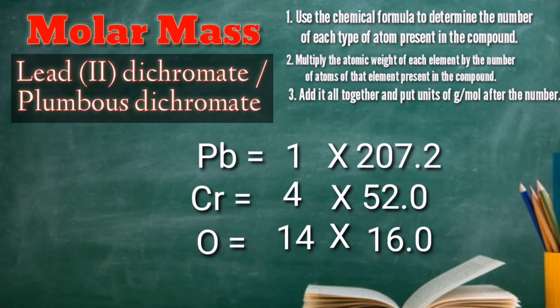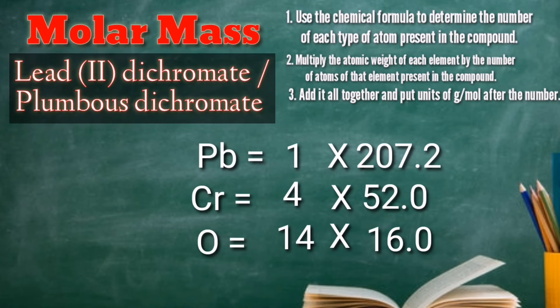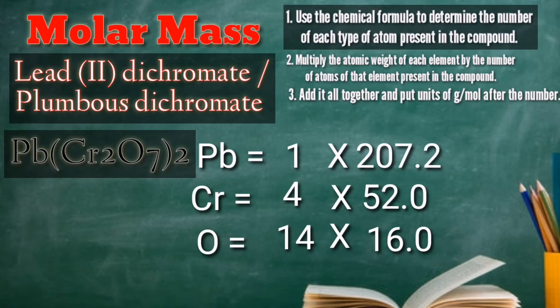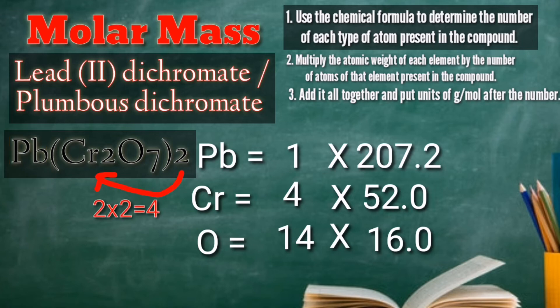Find the molar mass of lead(II) dichromate, also called plumbous dichromate. We have the formula Pb₂Cr₂O₇. Now, let's follow the three steps. First, use the chemical formula to determine the number of each type of atom present in the compound. As you can see, we have 1 atom of lead, 4 atoms of chromium, and 14 atoms of oxygen.